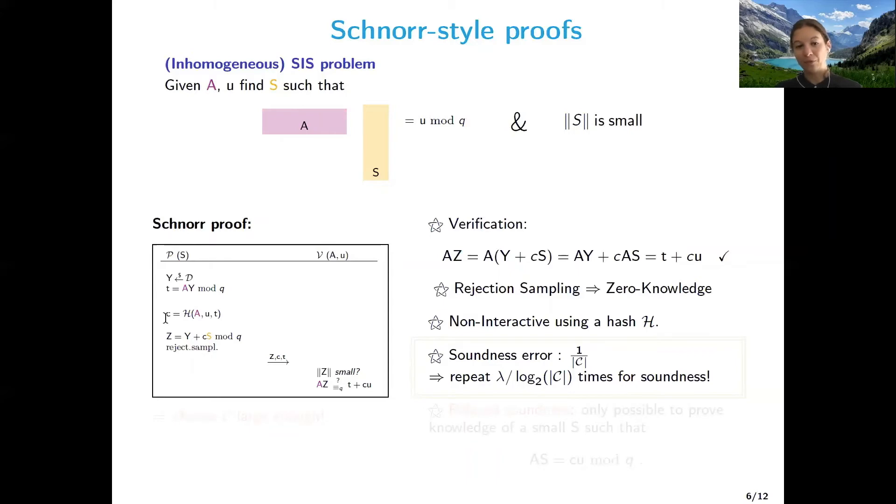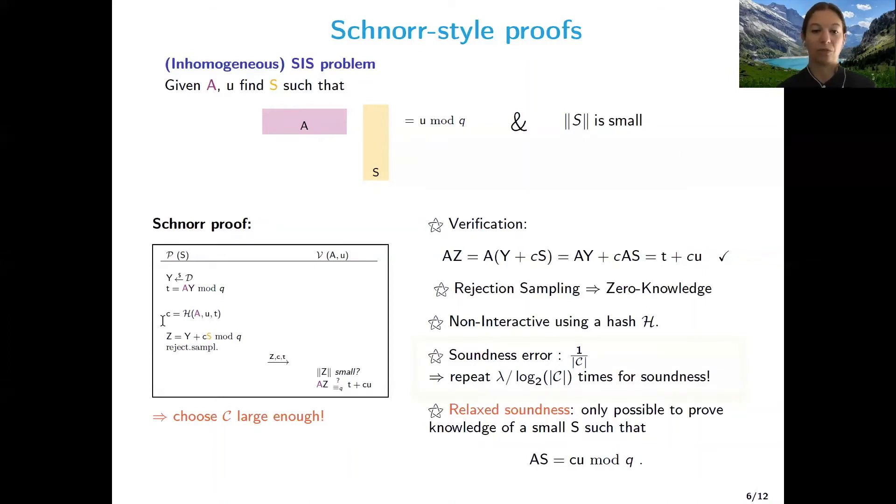Now, it's proven that the prover can cheat with probability at least one over the cardinality of the challenge set. Hence, we require to prevent this that the proof has to be repeated multiple times so that the prover actually has a smaller probability of cheating. And this is actually an issue because if we want to avoid repeating the proof, we need to choose a larger set of challenges. And it has been shown that so far this has impacted soundness. So at the end, what the prover can actually prove is that he knows a secret vector S such that A times S is equal to C times U, where C somehow depends on the challenges. And this is not exactly the original relation we wanted to prove.